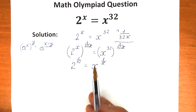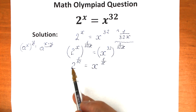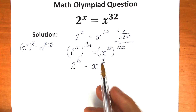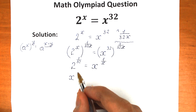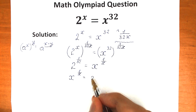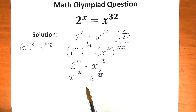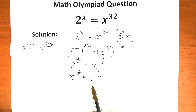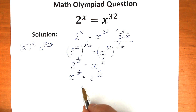Now let's swap the sides so x is on the left and the constant is on the right, since that's easier to work with. We have x to the power 1 over x, equal to 2 to the power 1 over 32. Now let's look at this 1 over 32 — we can rewrite it as 2 over 64.